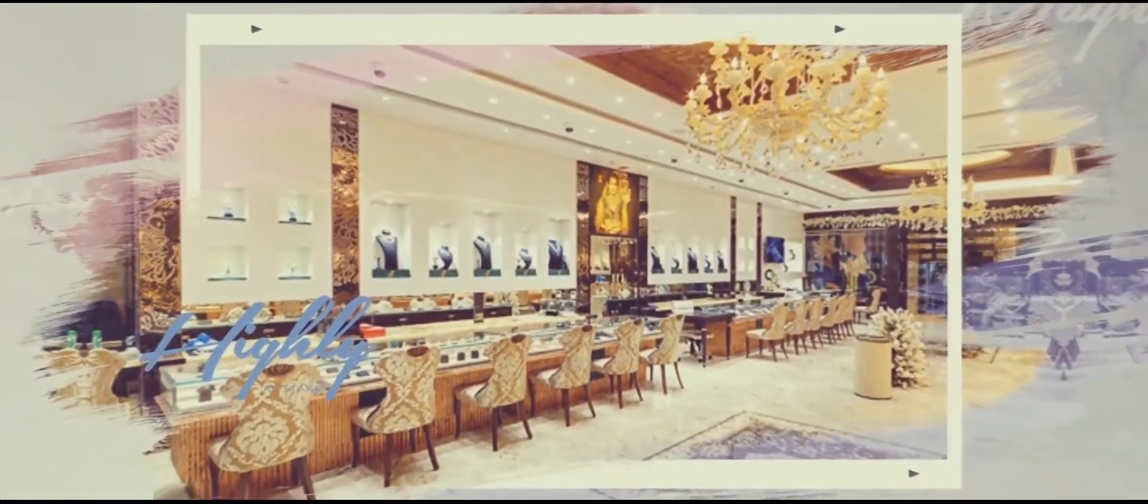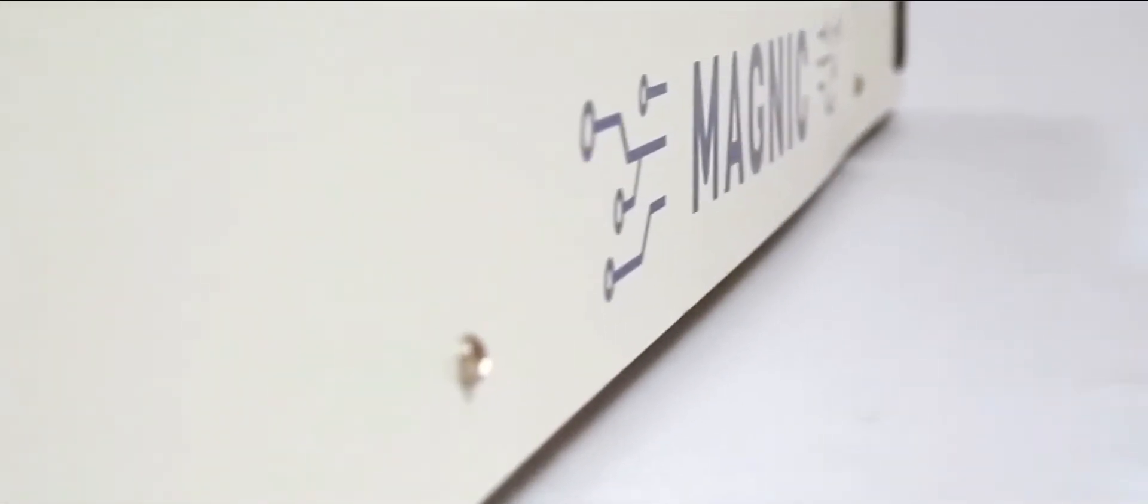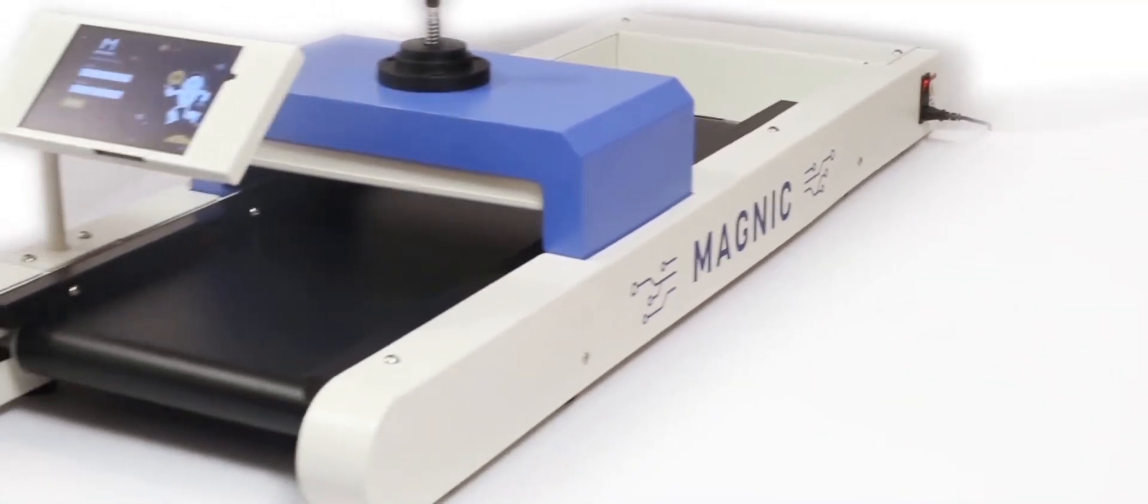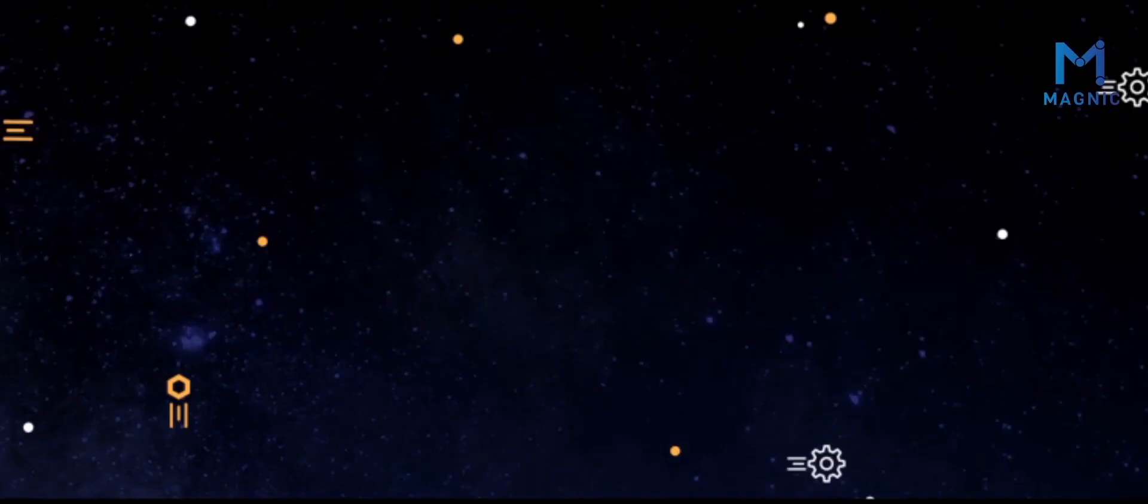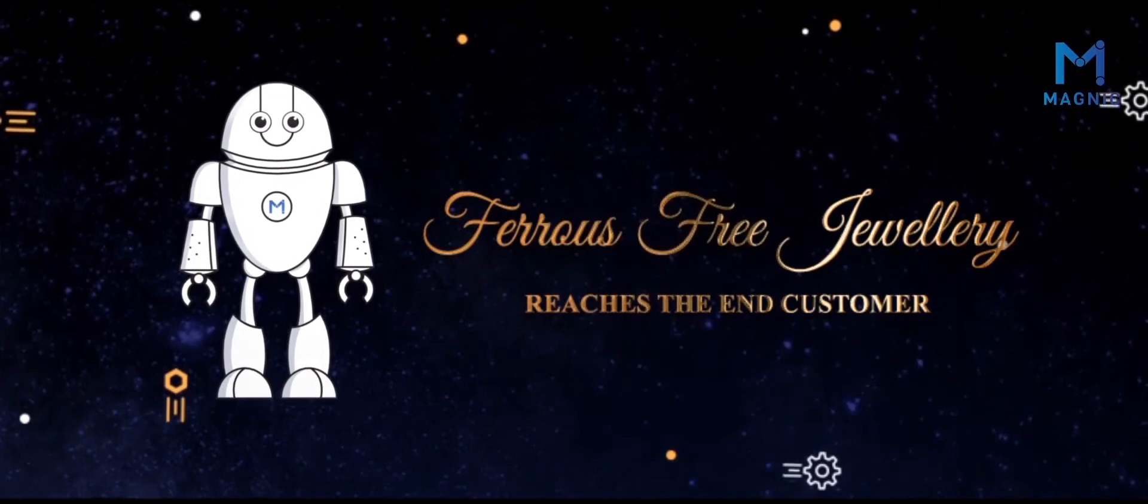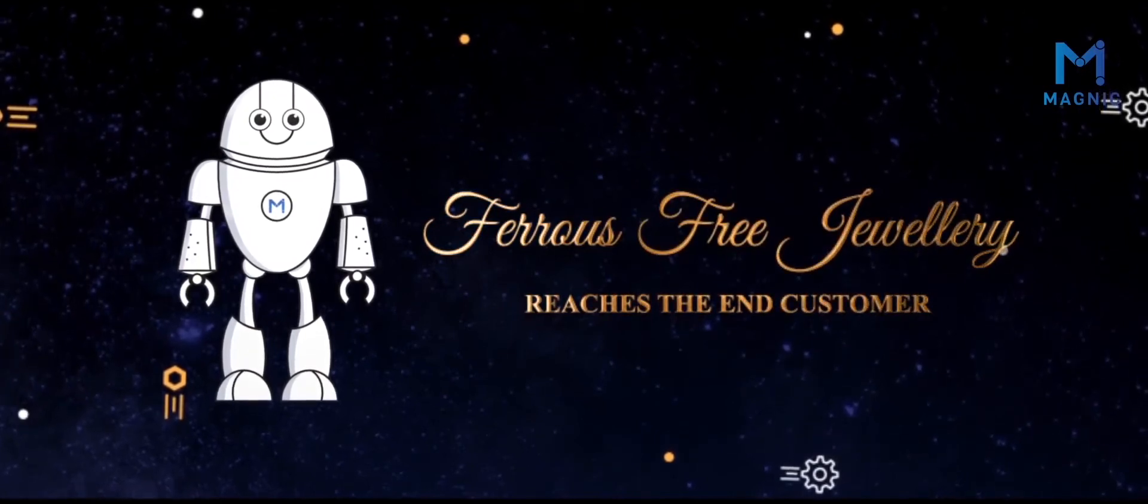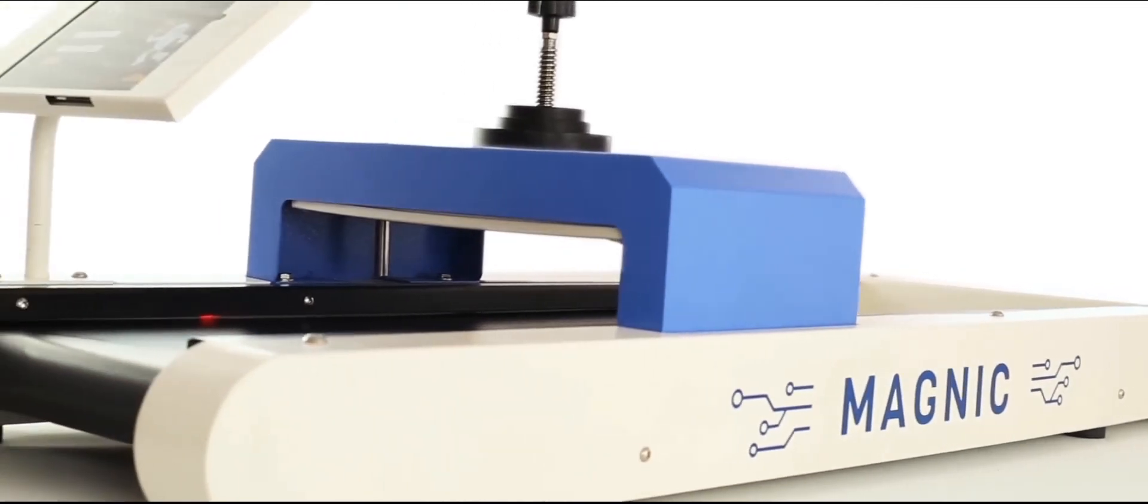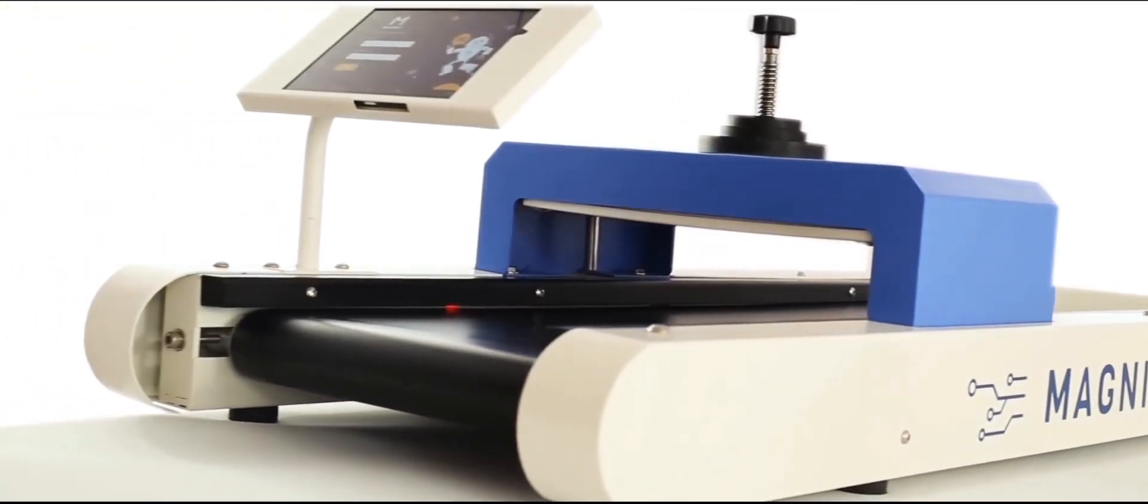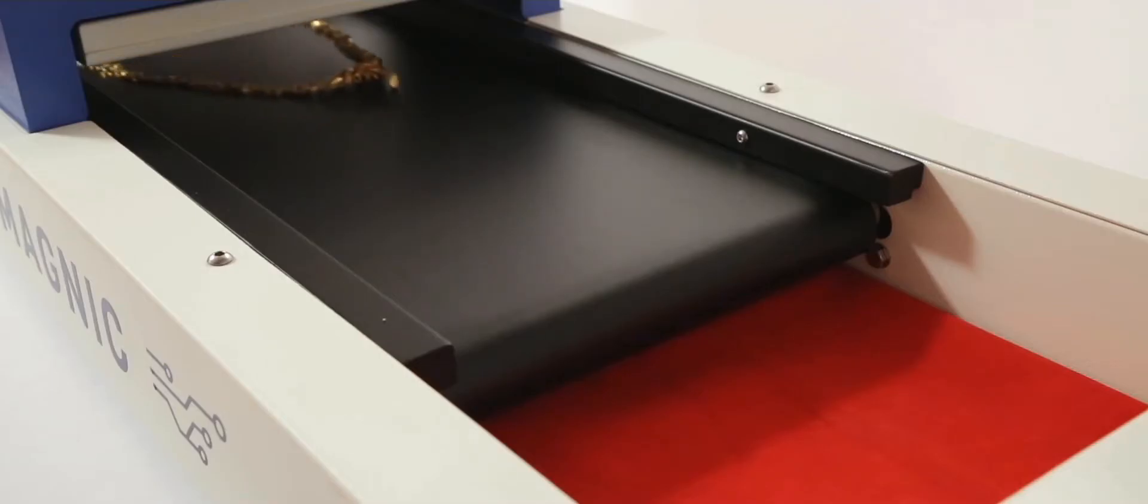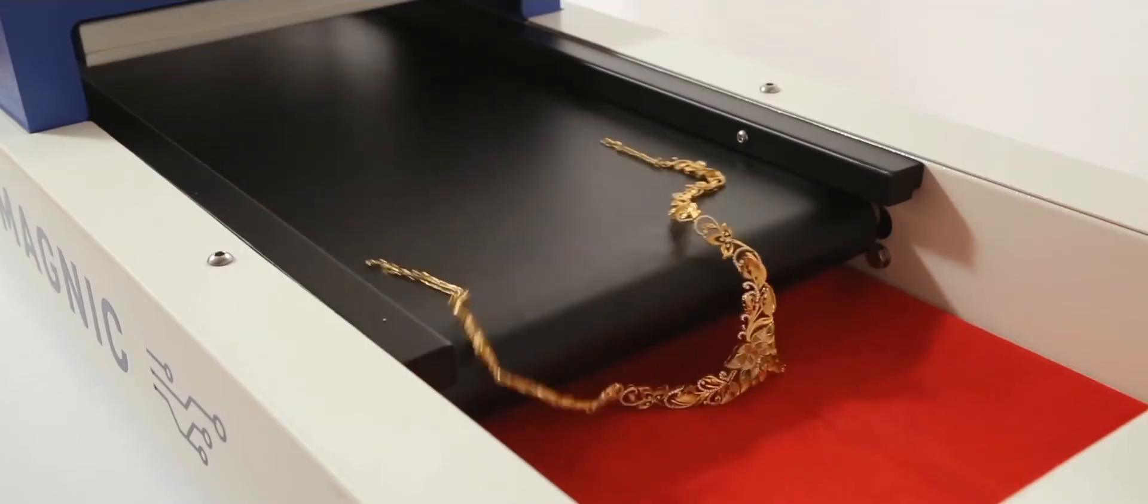That's when Magnic Technologies invented their world's first ferrous particle detection machine, a saviour who ensures that only ferrous-free jewellery reaches the end customers. The machine comes with an automatic defect segregation conveyor fitted with a collection tray to segregate the defective and non-defective jewels.